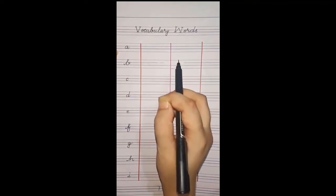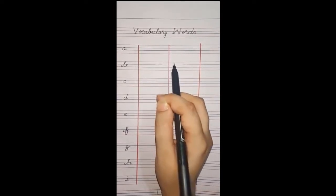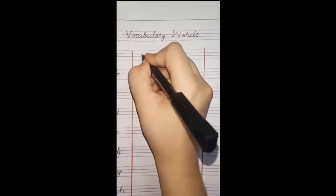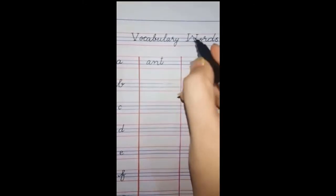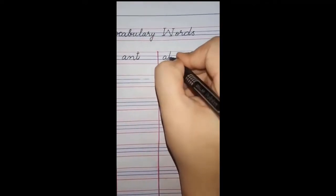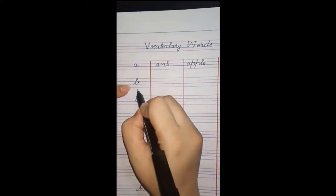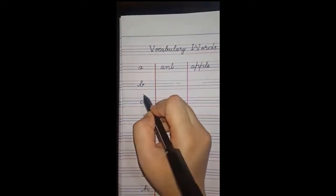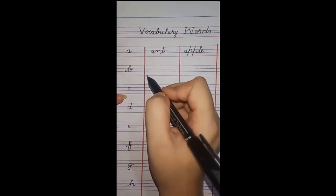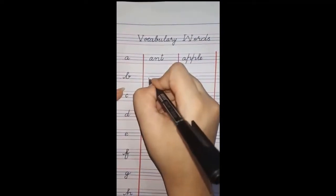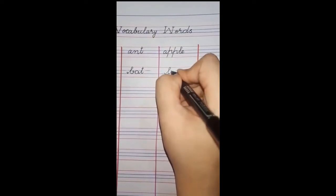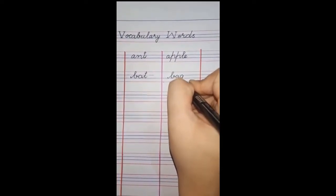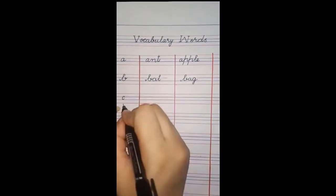We have to write a letter: ant, arrow, alligator. We will write here ant, apple. Apple means seb. Next letter is B. B - bag. How many friends? Like this.